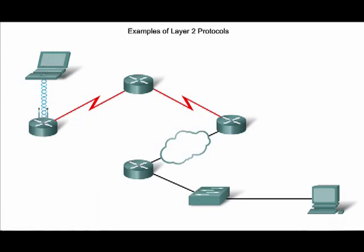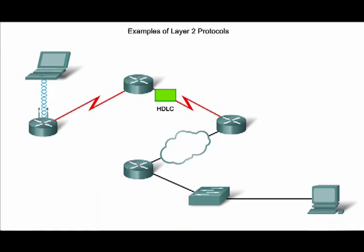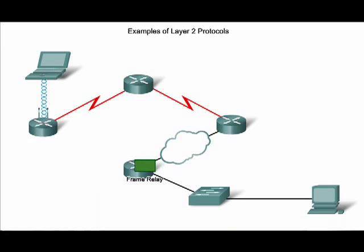As an IP packet travels from source to destination, it will cross devices using different media types. The data link layer is not only responsible for the initial encapsulation of the packet, but also for decapsulating, processing, and encapsulating it into a new data link frame as it traverses the media from one device to another. In this graphic, you can see that the layer 2 media changes from device to device, and so does the frame type used to travel over the links.